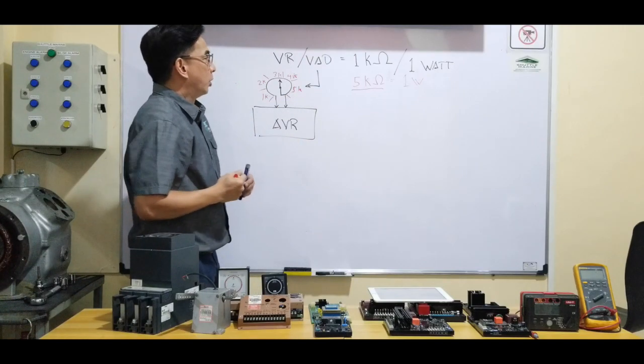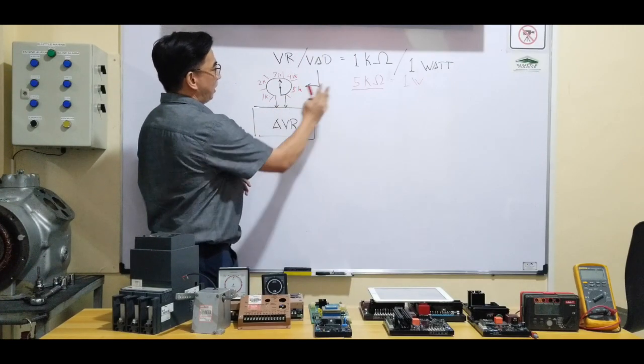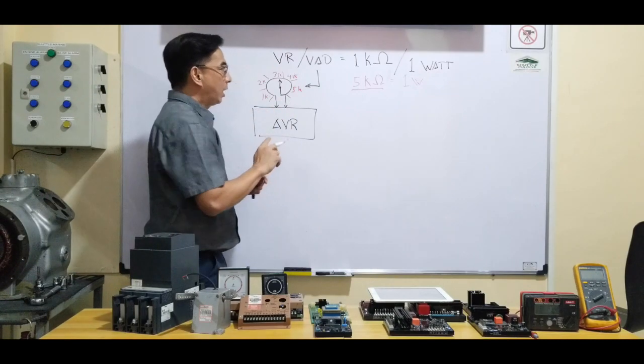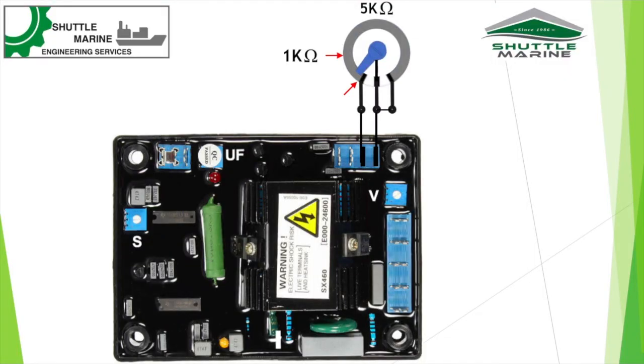Okay? So now, if I'll be having a 5k ohms, but the specific requirement for this certain AVR is 1k ohms, then the 1k is somewhere from this point up to this point only.